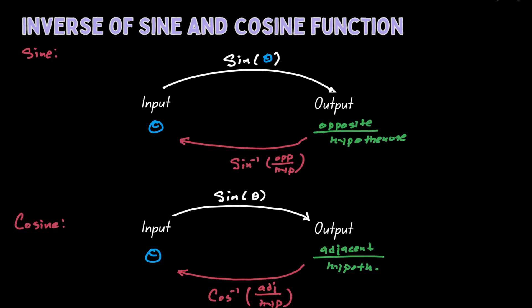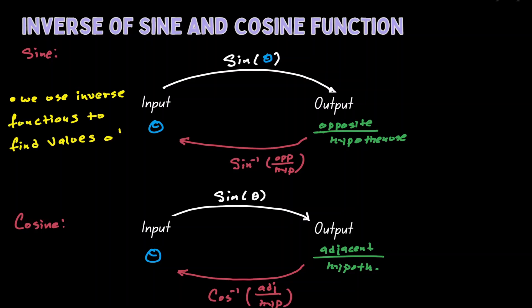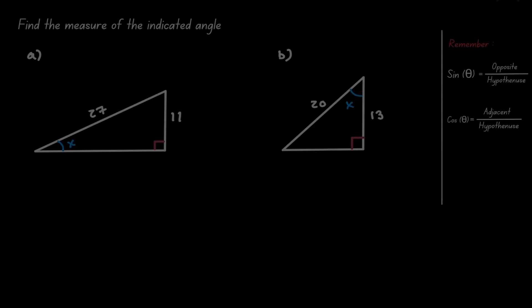We can think of the inverse of cosine as a function where we plug in the ratio of adjacent over hypotenuse and it will tell you what angle it comes from. The application for inverse functions is always to find the value of some angle. Let's apply this idea in the following examples. Given the following triangles, we want to find the value of the indicated angle, and because we're looking for angles we can think of inverse functions.